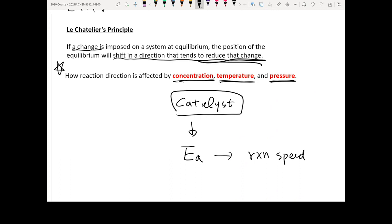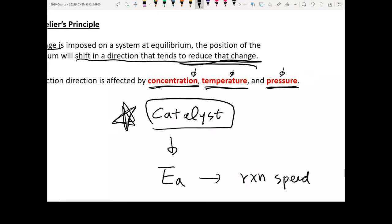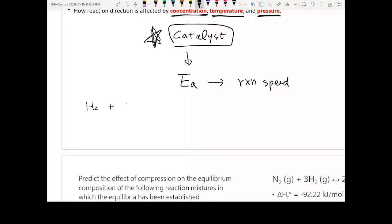We want to see how this is going to affect your equilibrium. Concentration is the most easy to comprehend. For example, if you have 3H2 plus N2 that gives you 2NH3. If you want to balance this, this will be 2, this will be 3. So this is the balanced equation for the ammonium production.